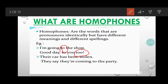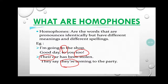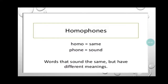Coming to the next example: 'Their car has been stolen' — here 'their' — and 'They say they're coming to the party.' Both are homophones; they have the same pronunciation but different meanings and spellings. 'Their' (T-H-E-I-R) is a possessive pronoun — it tells us about the possession of something. 'Their car has been stolen.' Next, 'they're' is a contraction: 'They are coming to the party.'